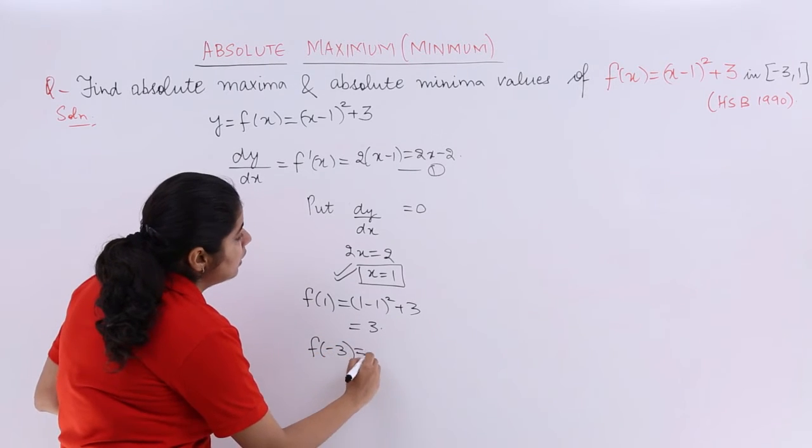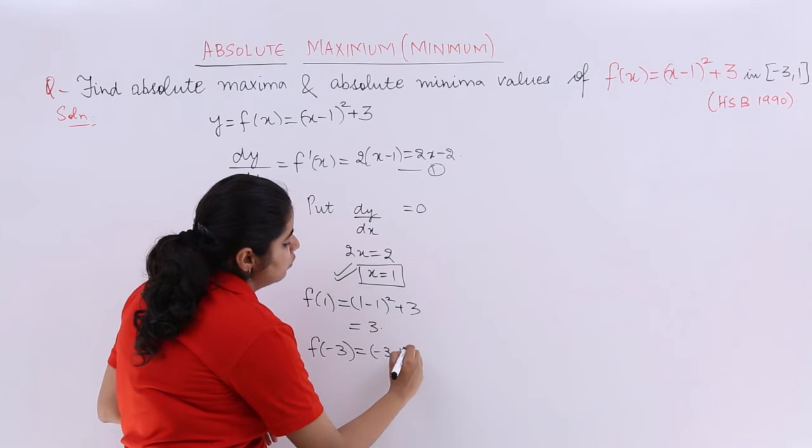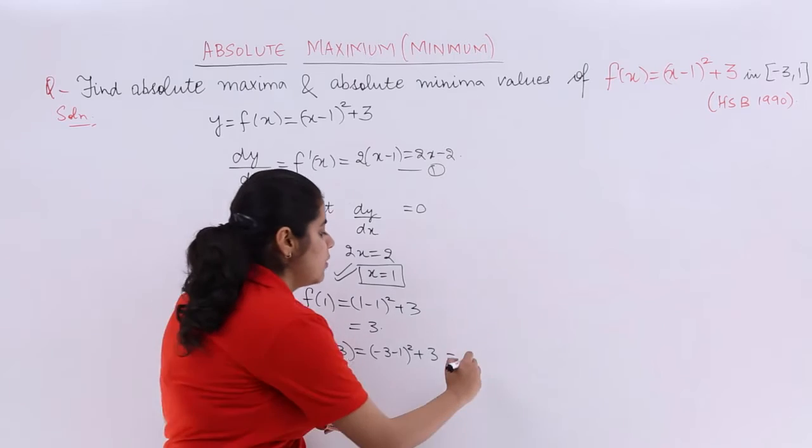Now, f of -3 is what? You are going to put -3 in the question. So it is (-3 - 1)² + 3. 4 square is 16 plus 3, which is 19.